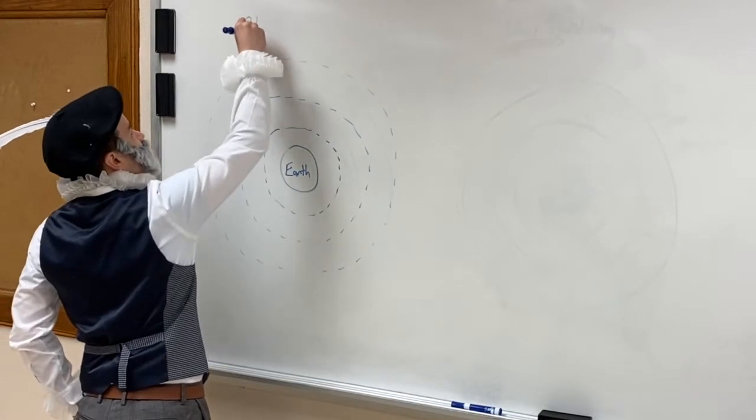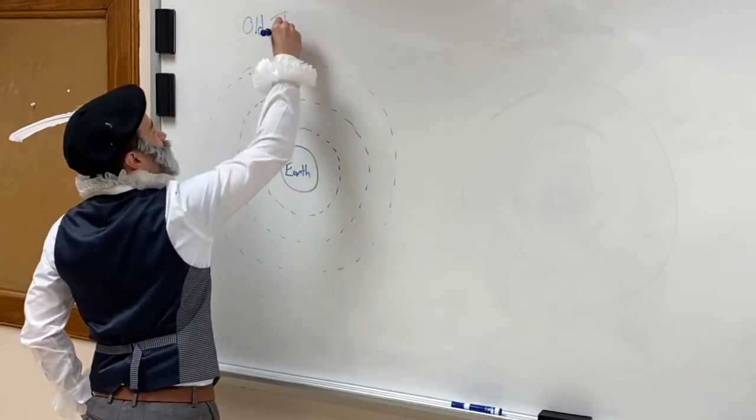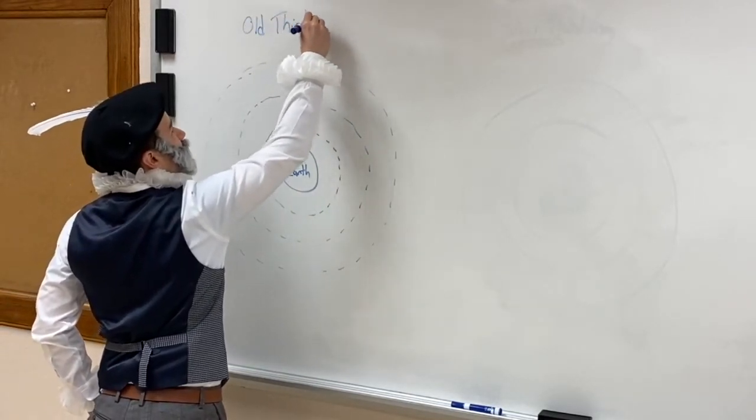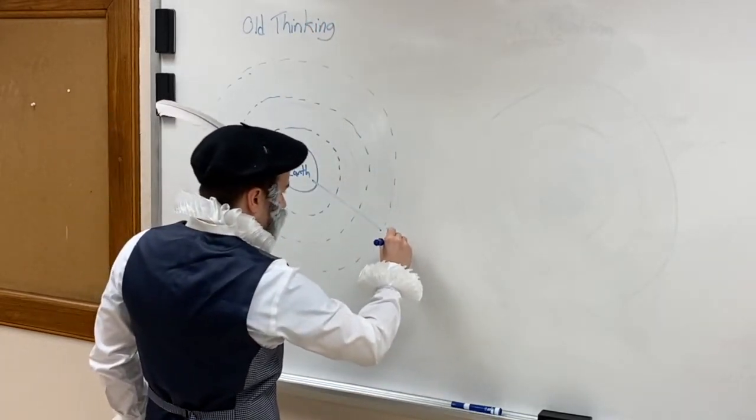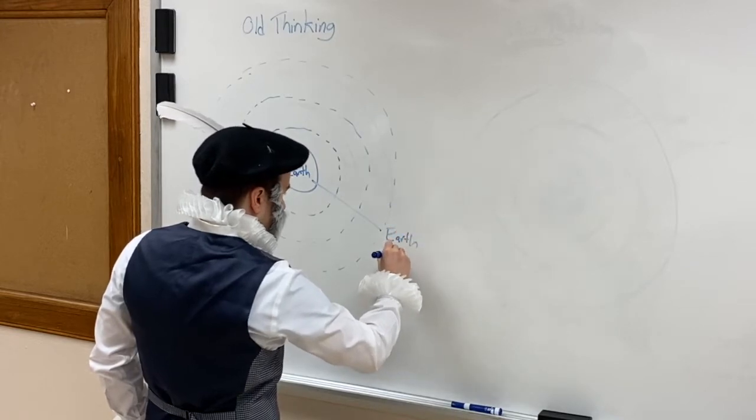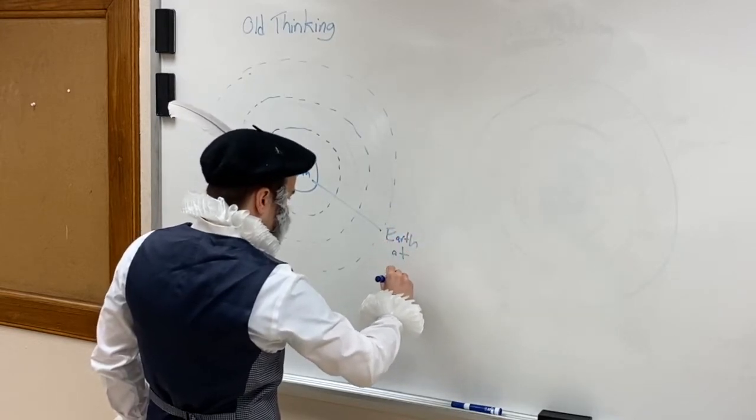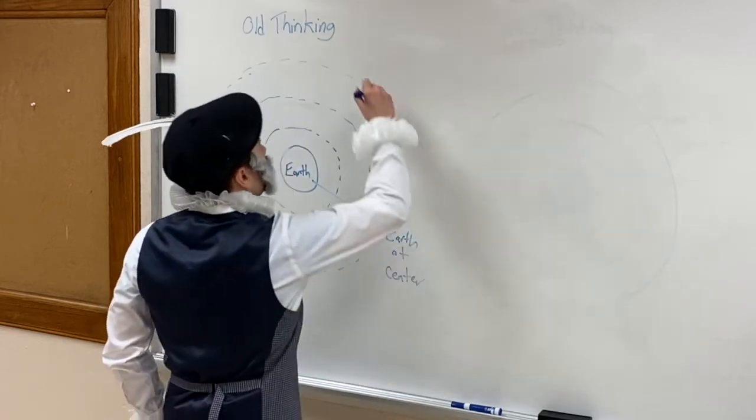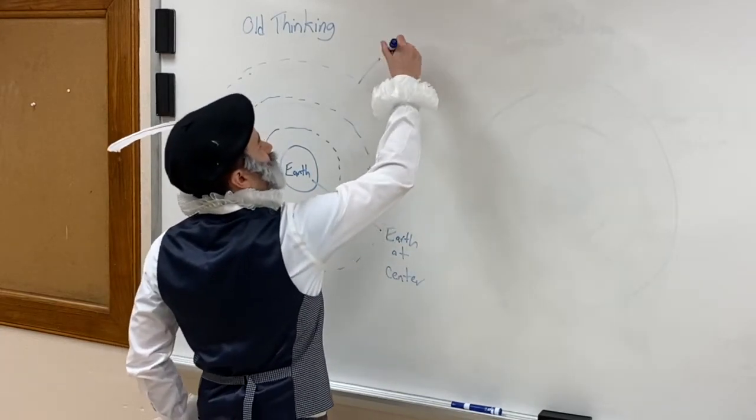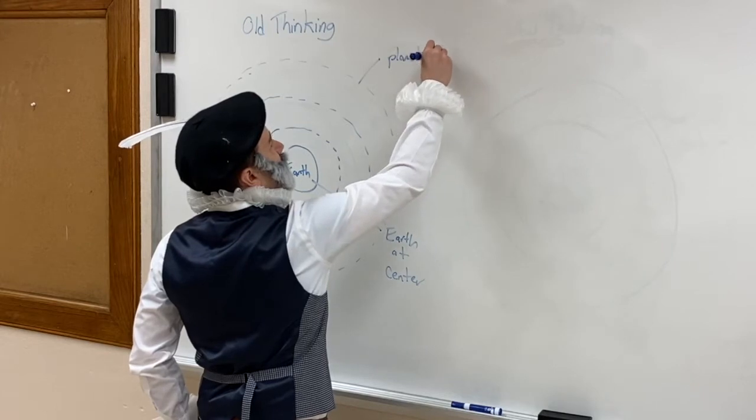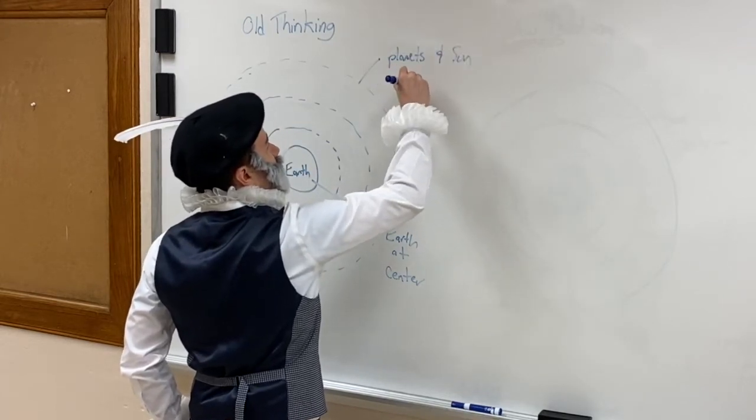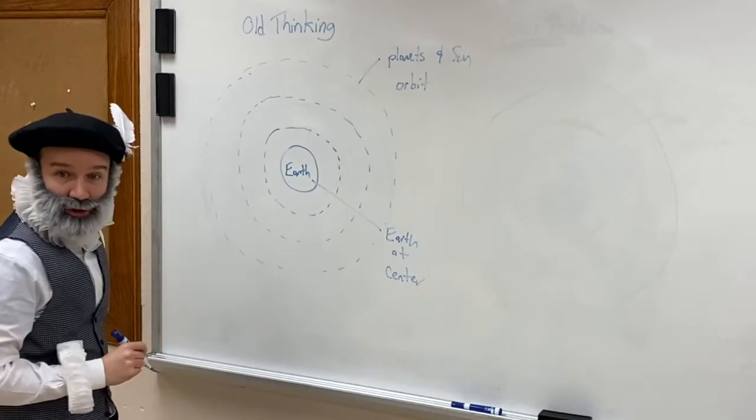Let's call this old thinking. Notice here we have earth at center and planets and Sun orbit in perfect circles.